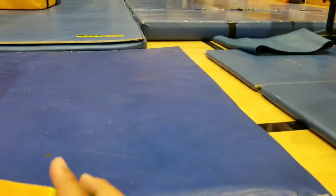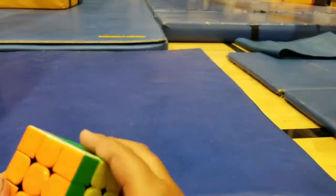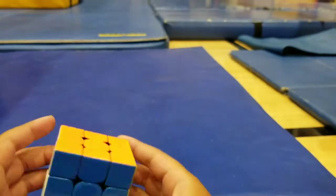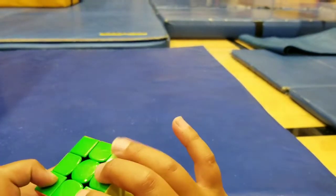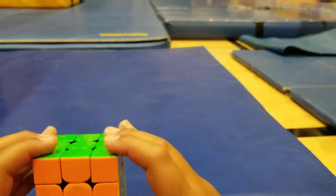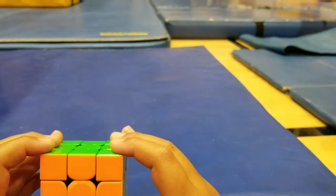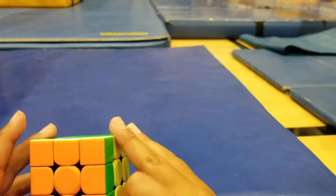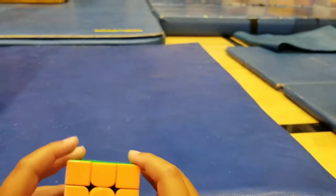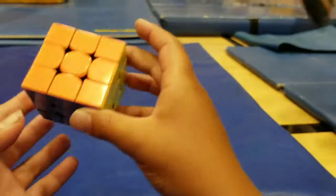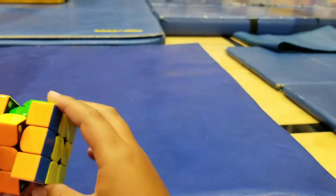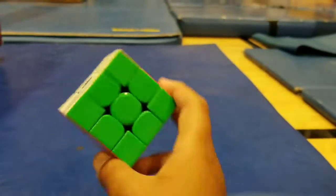want to do is F. So F is right in the front so you want to do this by putting your hands right here, thumbs right here, pointers right here. So for F you want to do this with your pointer finger. For F prime you don't want to do this, you want to use your thumb here and do that so you can just go into your position.